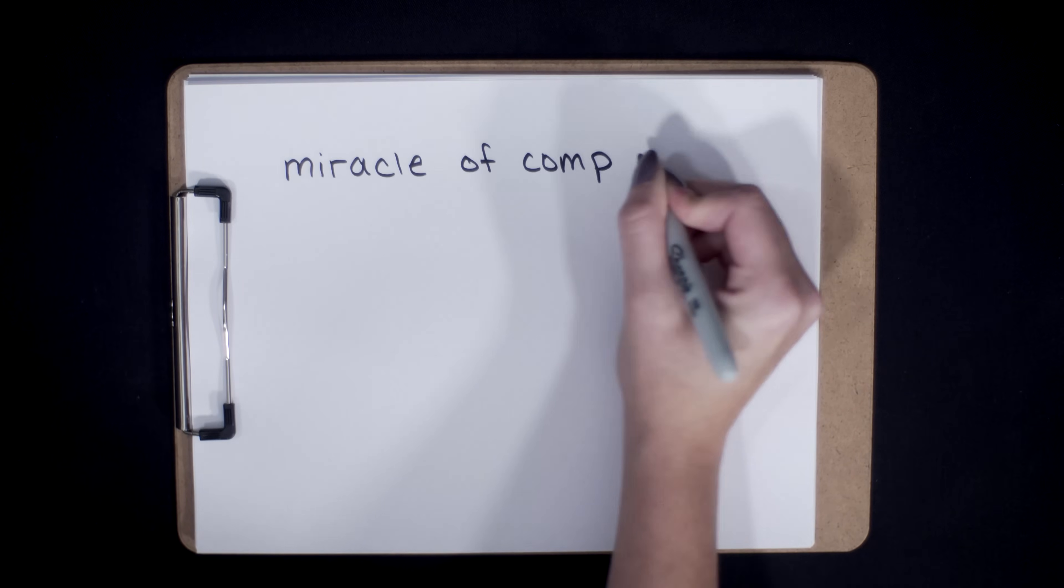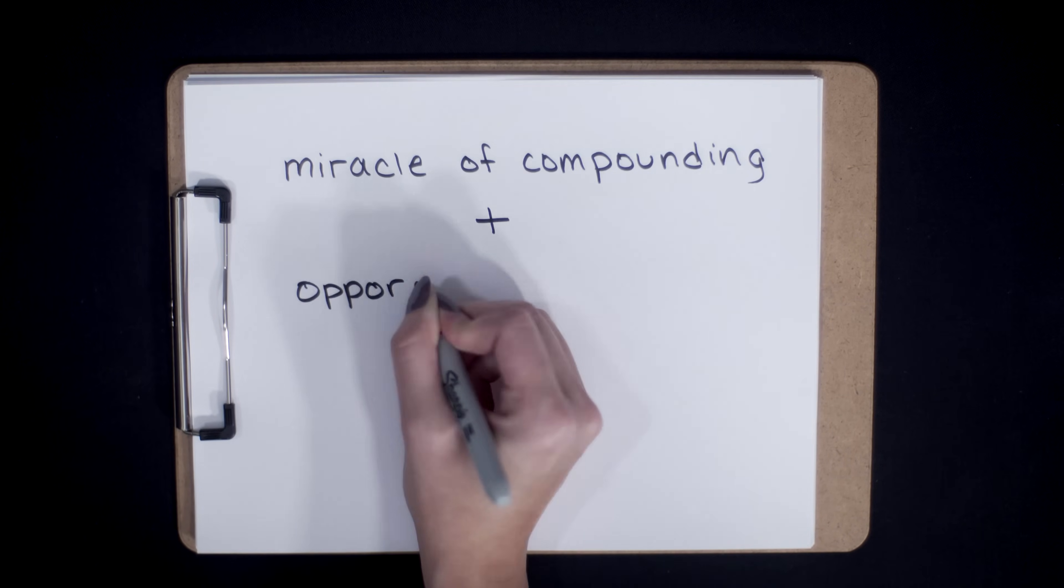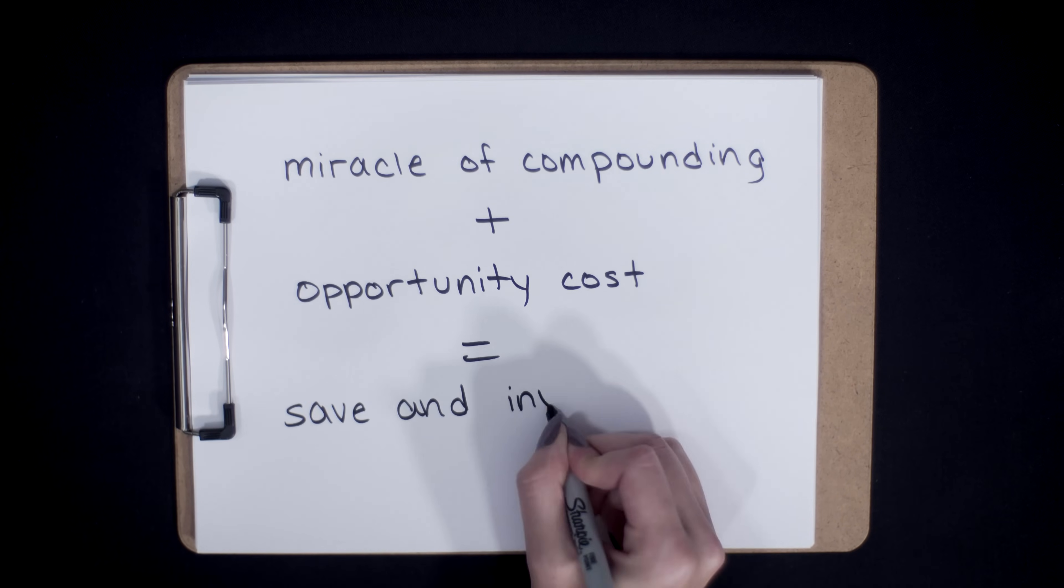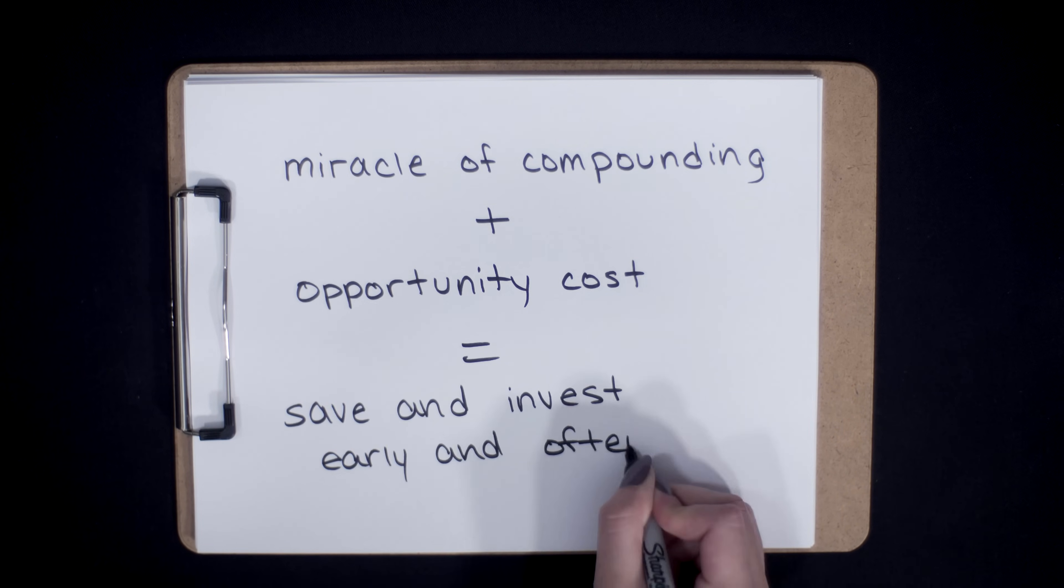Previously, we learned about opportunity cost, but how can this concept help us save smartly? We'll dive into an example illustrating the miracle of compounding and use opportunity cost to understand the importance of saving and investing early and often.